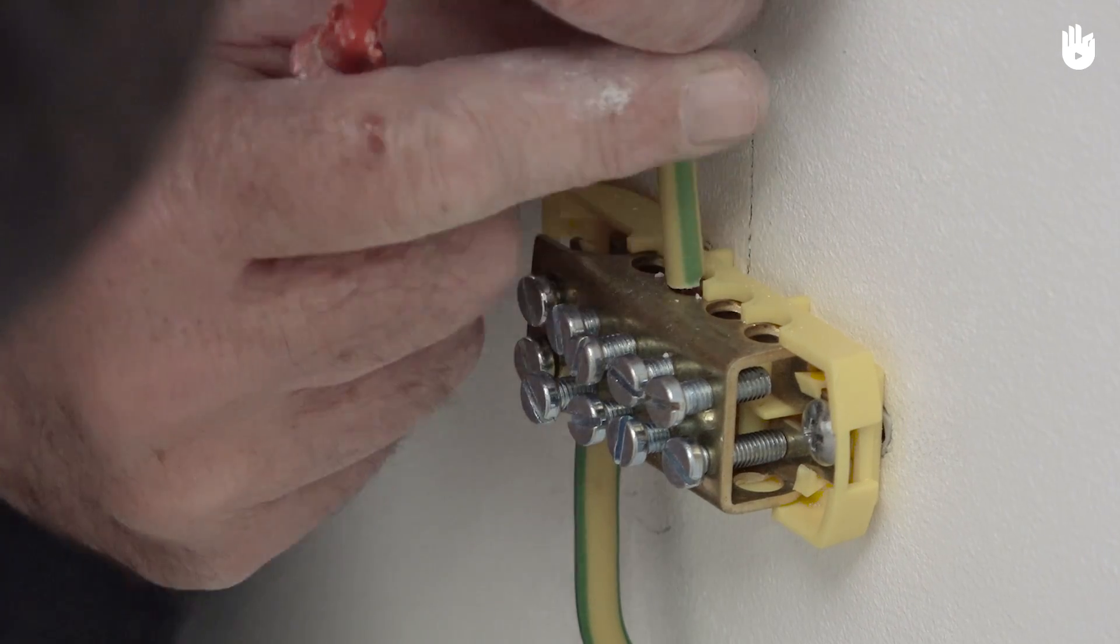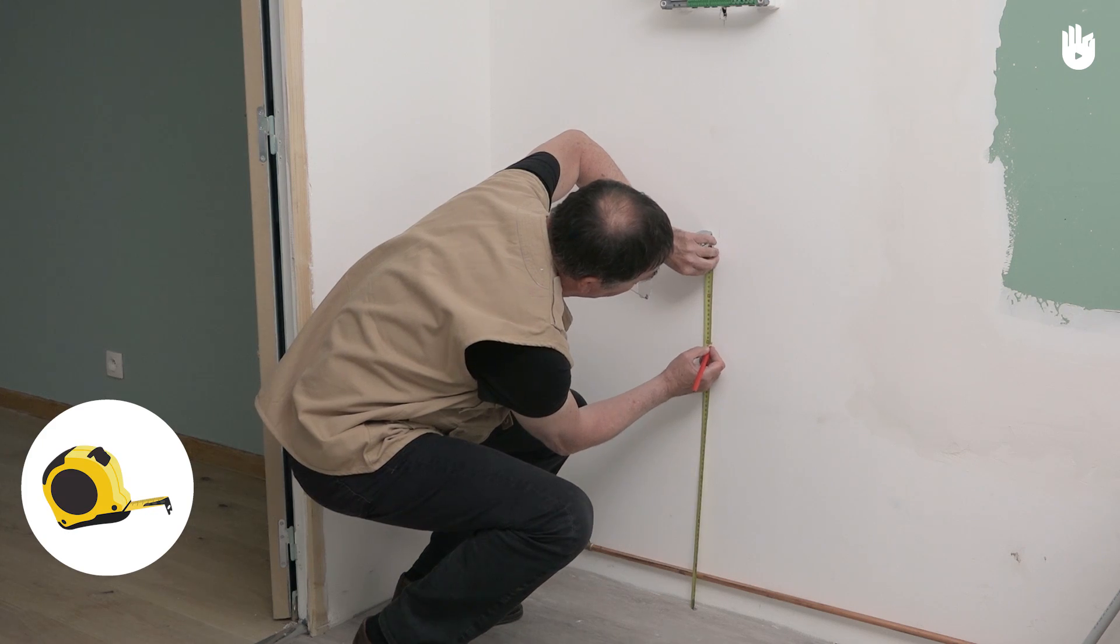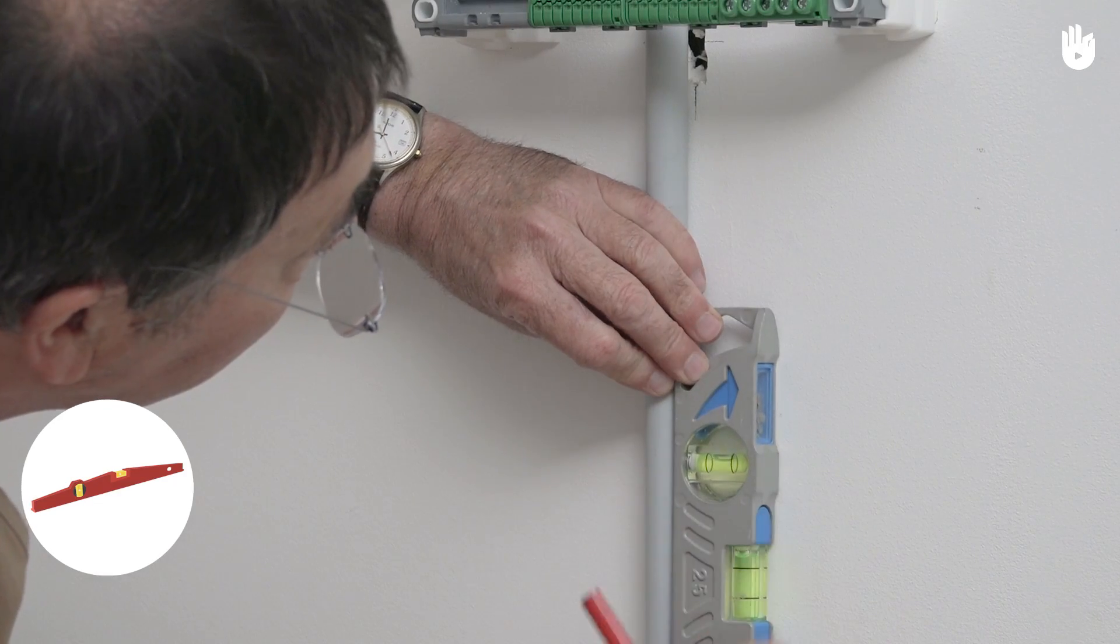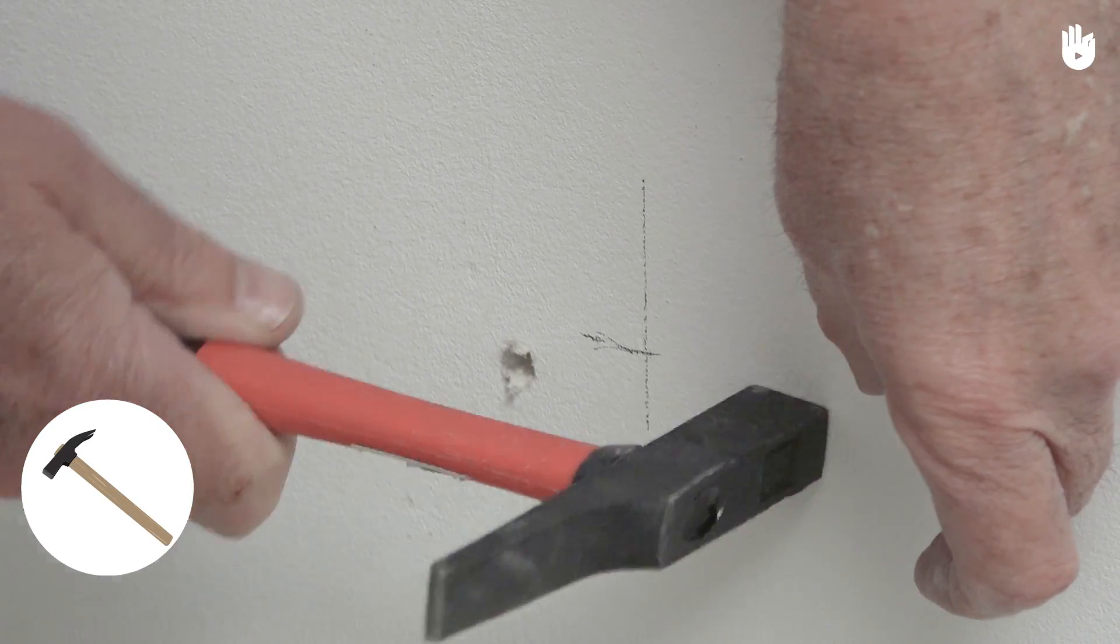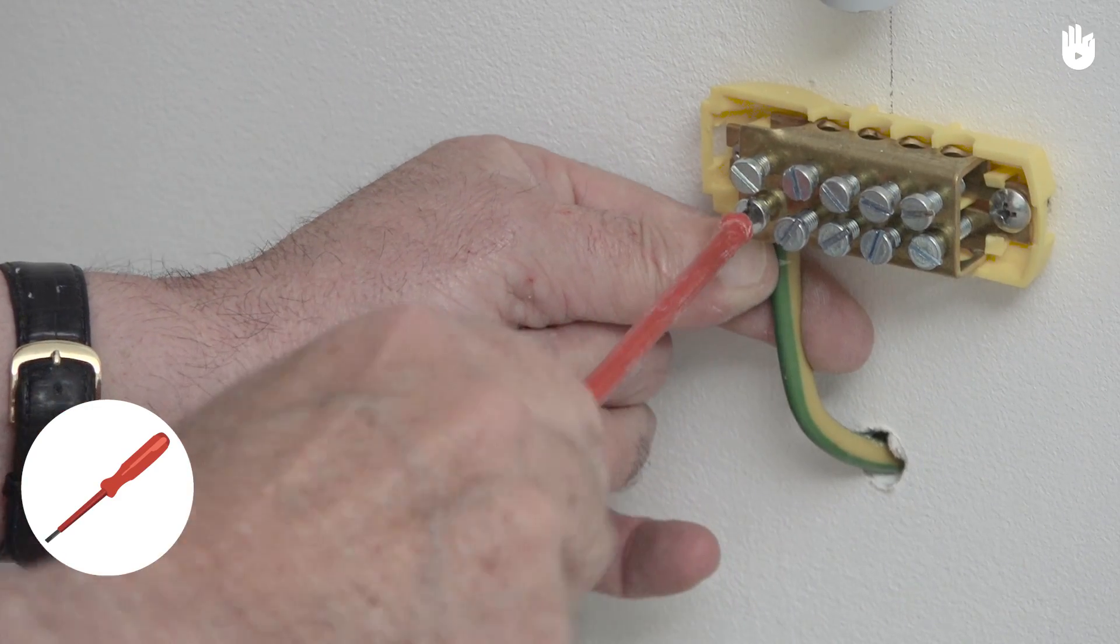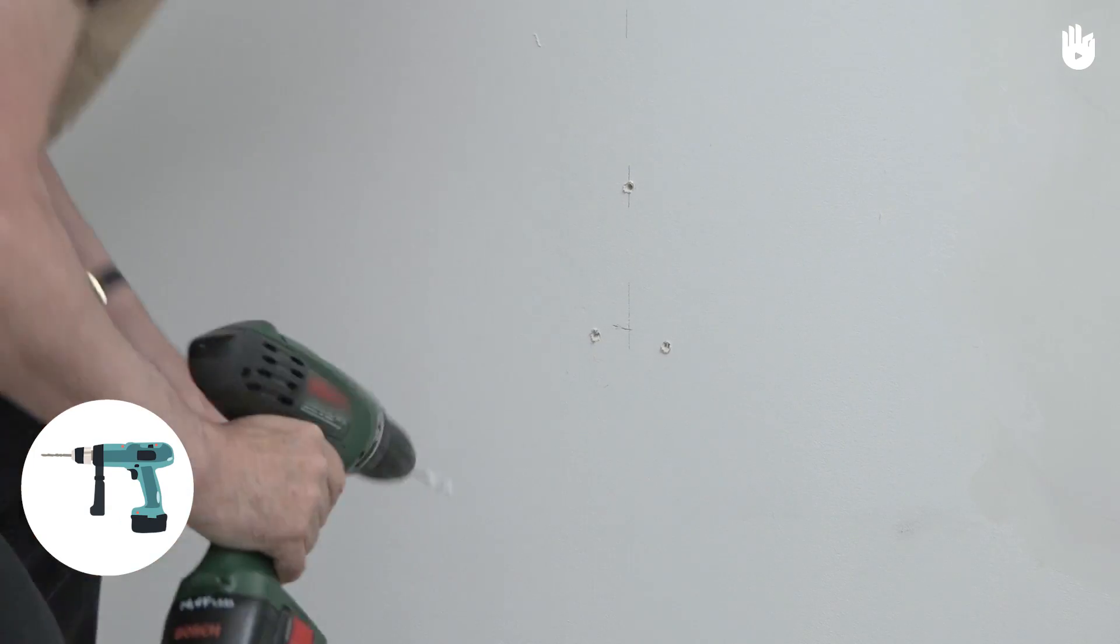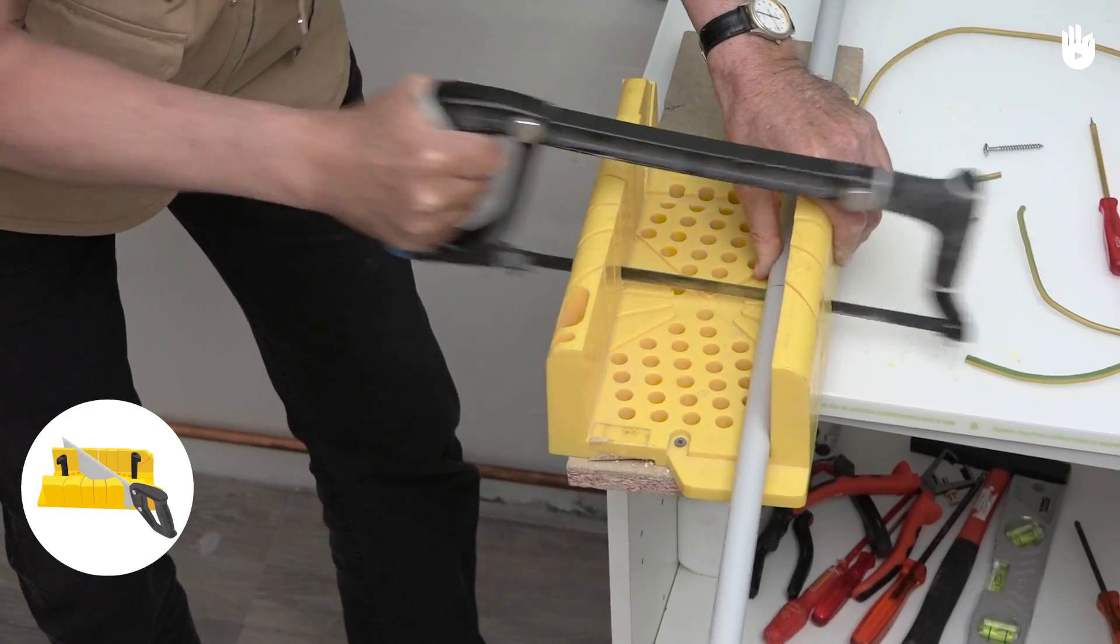To connect the ground connection, you will need a tape measure, a spirit level, a pencil, a hammer, a set of electrician screwdrivers, a drill, a metal saw and a mitre box.